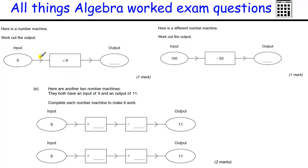The first one is about function machines, and the first function we're going to do is times by 9. So we're putting 8 into the machine. 8 times 9 is going to be our output, which is 72.